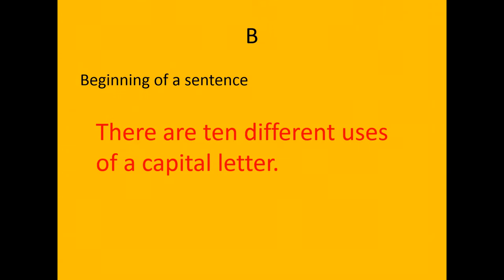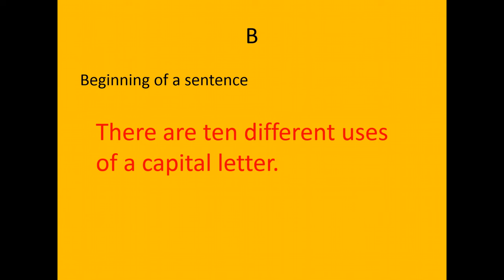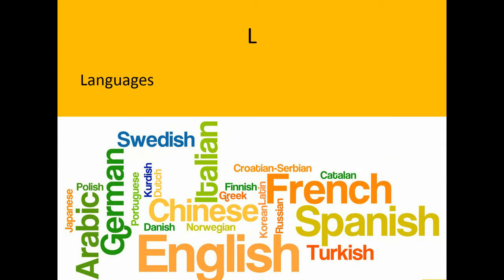B is the one that everybody probably knows: the beginning of a sentence. Here's a simple sentence — there are 10 different uses of a capital letter — and that sentence starts with a capital T at the beginning. One of the problems with this rule is that some people don't actually understand what a sentence is. As you'll see in the other videos in this grammar series, sometimes there is confusion over where one sentence finishes and another one starts, and of course you need to know that to put the capital in the right place. So it seems simple, but it's not.